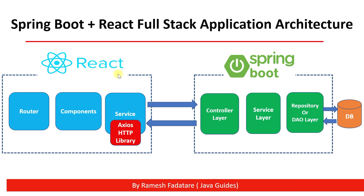In terms of integration, from the Spring Boot application we expose REST endpoints, and the React application consumes those REST APIs. As mentioned, React is not concerned with HTTP, so to make a REST API or AJAX call from React, we have to use a third-party library like Axios, or we can also use the JavaScript Fetch API. This is how we integrate a React application with Spring Boot.